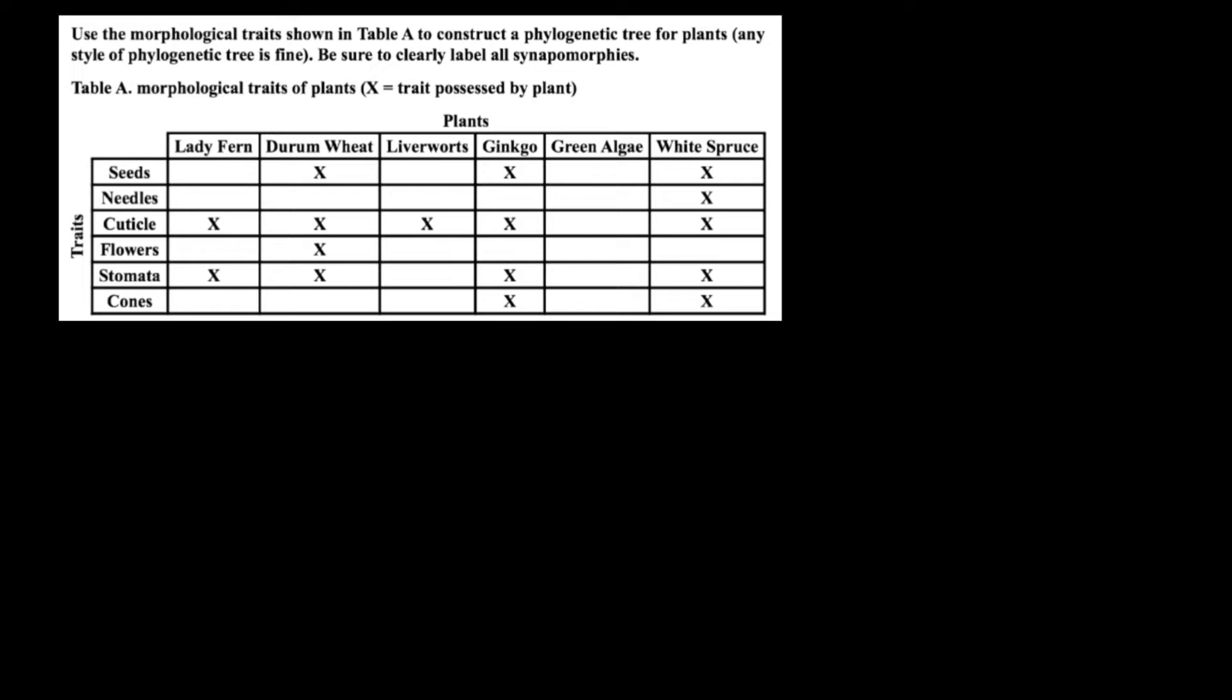And here's going to be the sides of the phylogenetic tree. And green alga, as you see, doesn't have any traits. So we put it here, and we put GA, which is going to stand for green alga. One more time, green alga doesn't have any traits which other plants have. So this is going to be our outgroup.